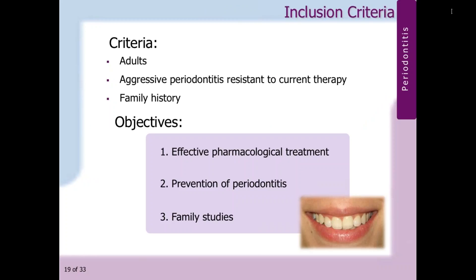The inclusion criteria for this test includes adults who are diagnosed with aggressive periodontitis, especially those who are resistant to current therapy. The objective is identifying the bacterial pathogens to administer effective pharmacological treatment for the prevention of periodontitis, and also to prevent periodontitis in an individual or in family members.